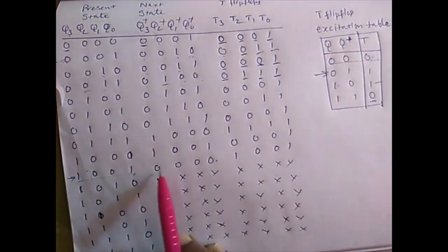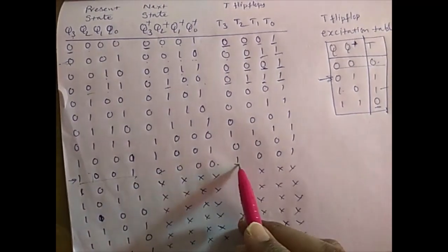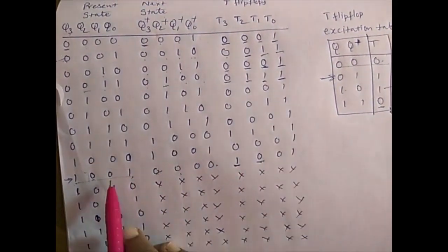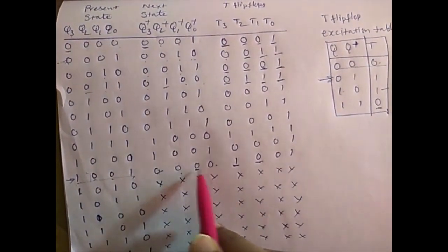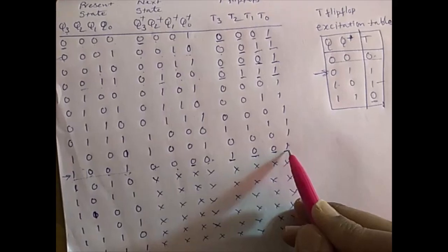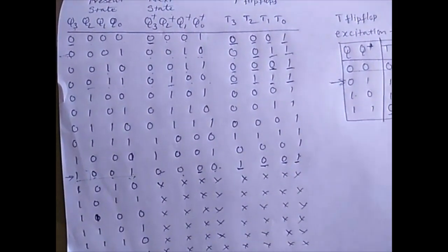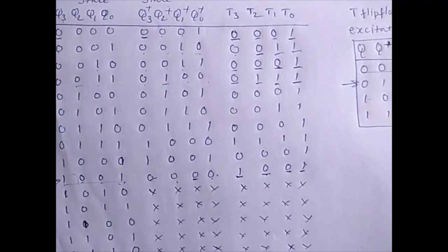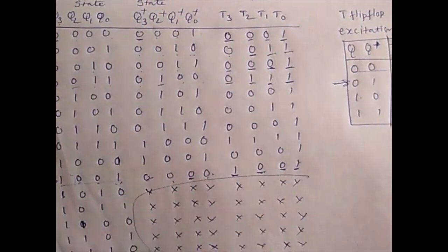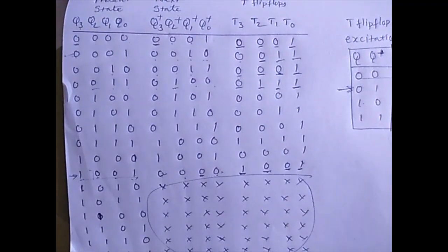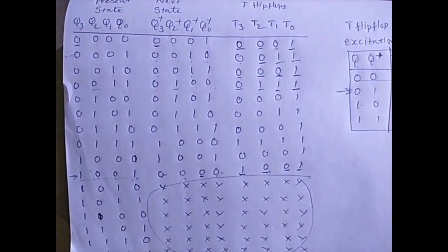For state 9 (1001) moving back to 0 (0000): Q1 goes 1→0, change in state so T=1; Q3 goes 1→0, change in state so T3=1; Q2 goes 0→0, no change so T2=0; Q0 goes 1→0, change so T0=1. Since we only use states 0 to 9, conditions 10 through 15 are taken as don't care conditions.